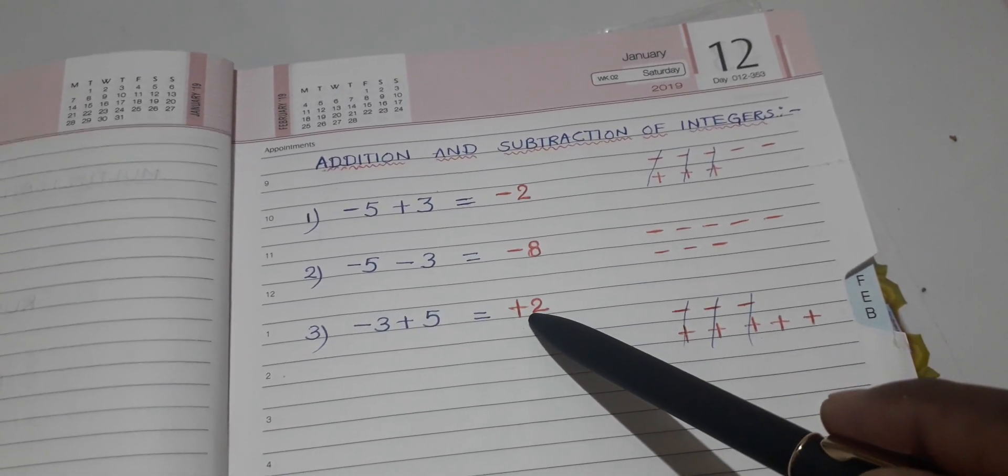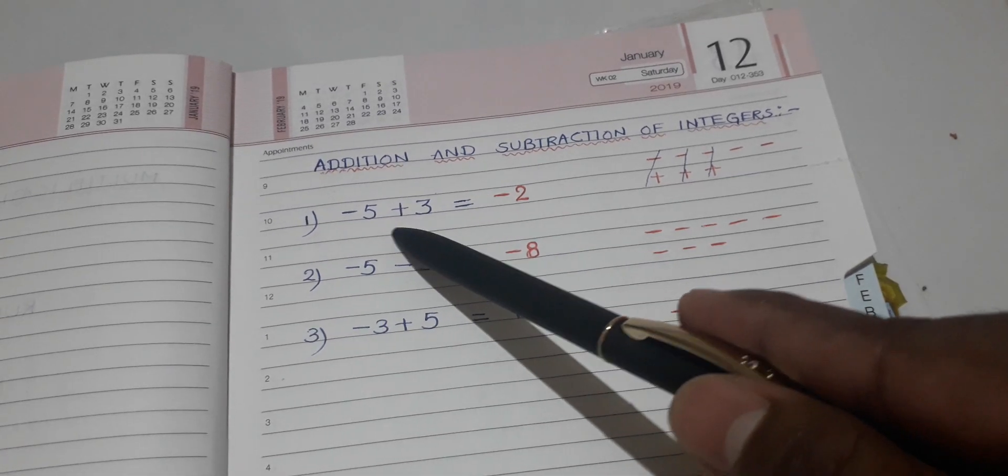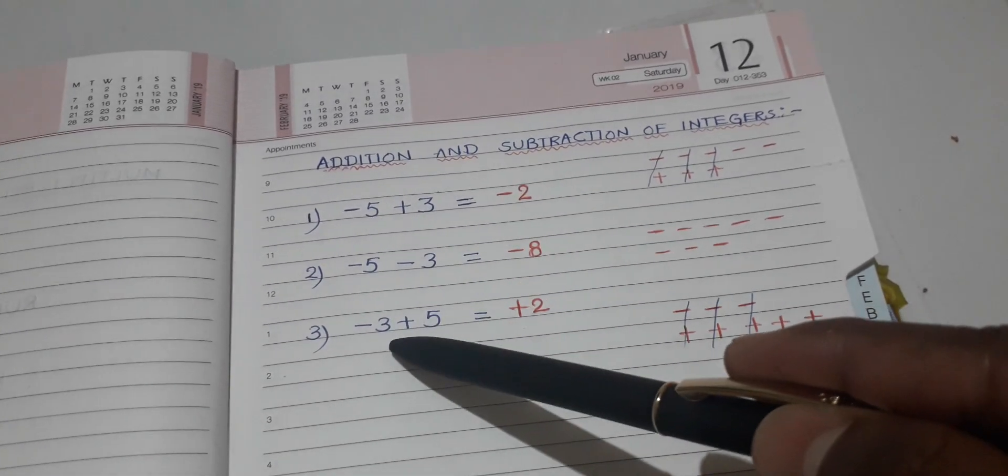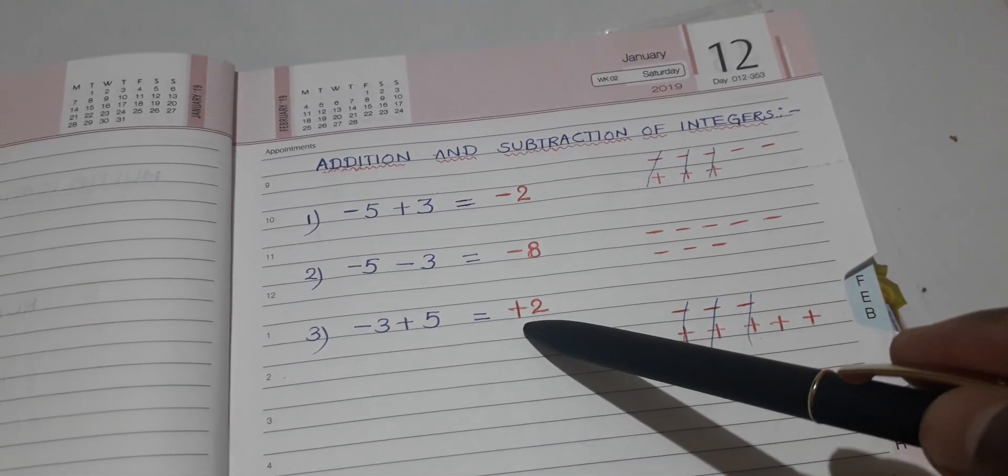So the answer is plus 2. So we can tell that minus 5 plus 3 is minus 2, minus 5 minus 3 is minus 8, and minus 3 plus 5 is plus 2.